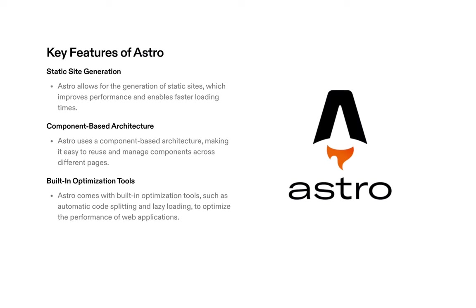Key features of Astro. Static Site Generation: Astro allows for the generation of static sites, which improves performance and enables faster loading times. If you've ever visited an Astro website or tried Astro yourself, you can see it has faster loading times and improved performance. It's a fact — Astro is faster than any other web framework. You can see this through the results when you load up the webpage and it loads instantly as the static HTML is delivered.